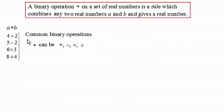Now you should already be familiar with certain binary operations. Let's say addition—add two real numbers together, you get back a real number, 4 add 2 is 6. The same with subtraction, multiplication and division. So these are common binary operations. This star symbol is replaced with plus, minus, times, or division.